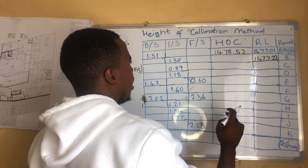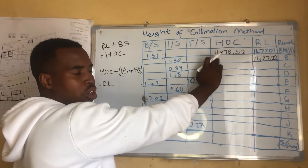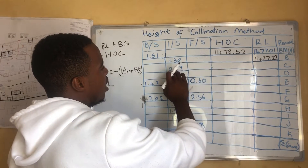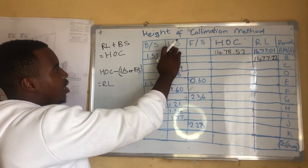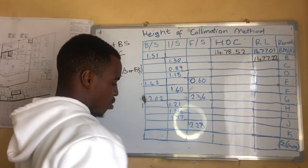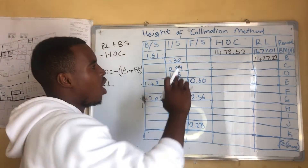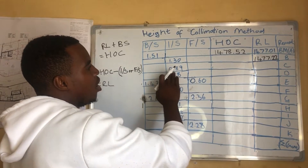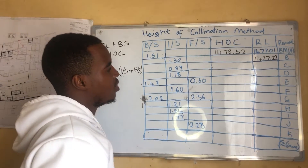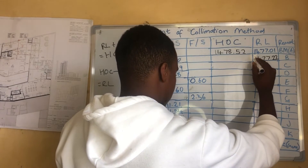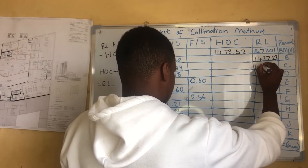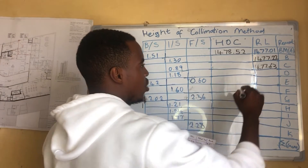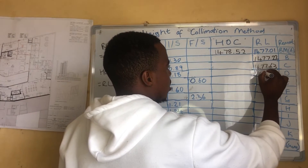We come back to Height of Collimation minus the intermediate sight — always it is Height of Collimation minus what you are having. For point C, we are saying Height of Collimation minus the intermediate sight for C, and we get 1477.63. We do the same for D.